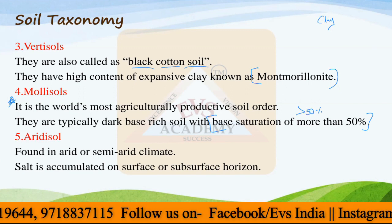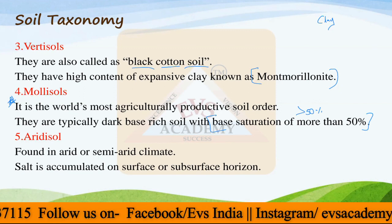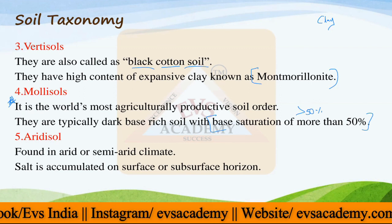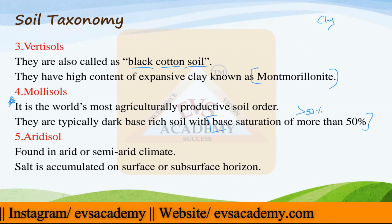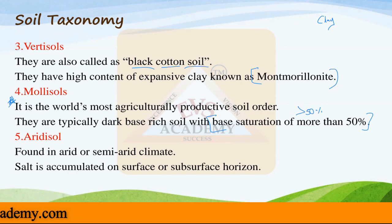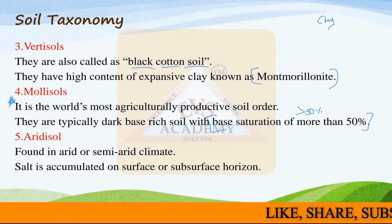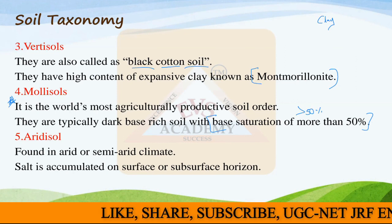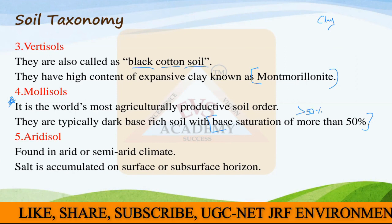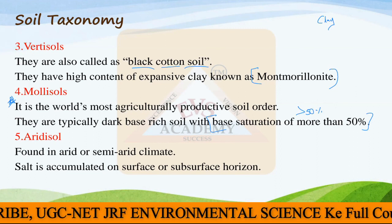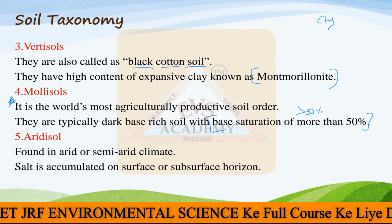Then we have the arid soils - Aridisols. As the name suggests, these are found in the arid or semi-arid climate, and salt is accumulated on the surface or subsurface horizon. That is due to the insufficient amount of precipitation or rainfall in the arid zone, so salt is not leaching away or going away with runoff - it is accumulated in one place.